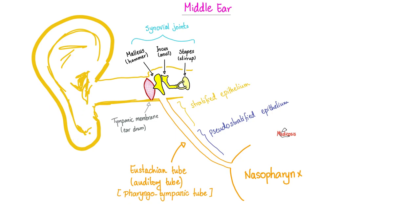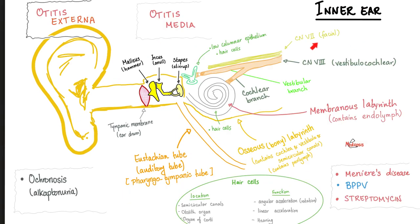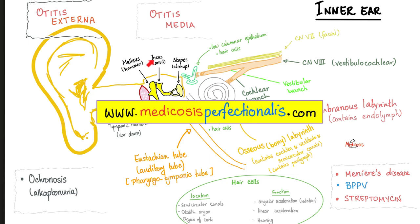As for the inner ear, it's for hearing and balance. Hearing is by the cochlea. Balance is by the three semicircular canals, utricle, and saccule. It's the cochlea versus the vestibule. That's why cranial nerve 8 is called the vestibulocochlear nerve, or stato-acoustic nerve. If you wish to download these colorful notes, go to medicosisperfectionitis.com.